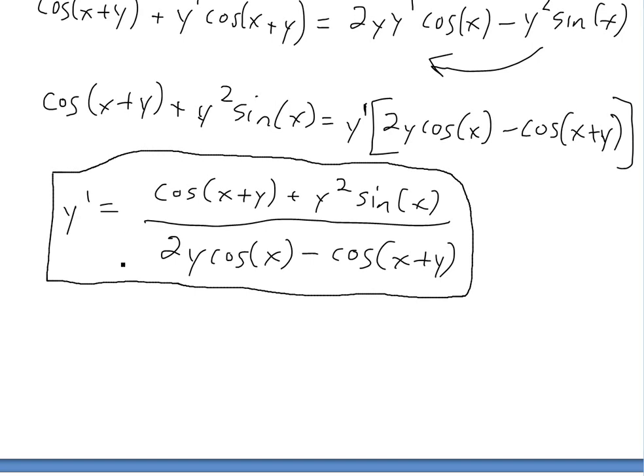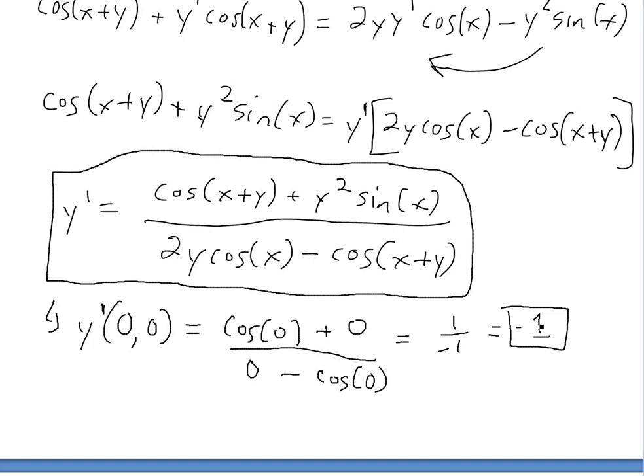Just another quick part to illustrate this better: let's say you want to find y prime at x equals 0 and y equals 0. This would be cos of 0 plus 0, that we put the 0 in here, and this is going to be 0 times sine 0, so 0 minus cos 0. Cos 0 is just 1, so we'll have 1 over negative 1, which equals negative 1. You can find a derivative pretty easily.